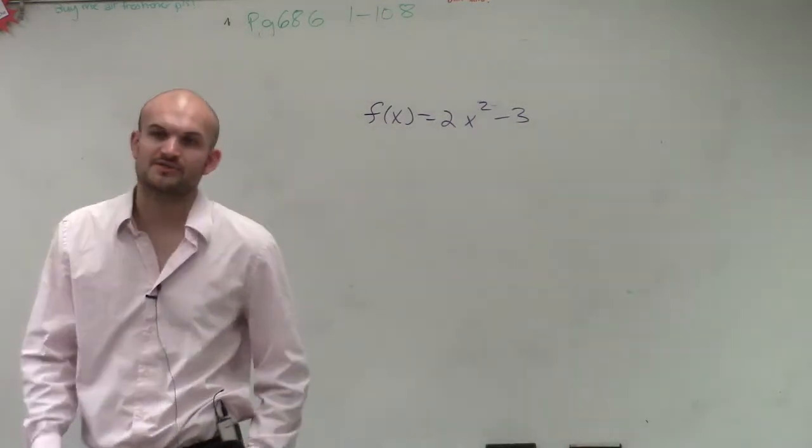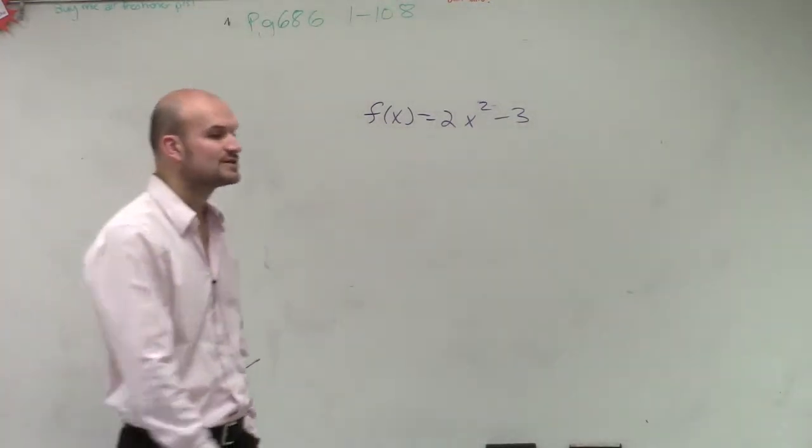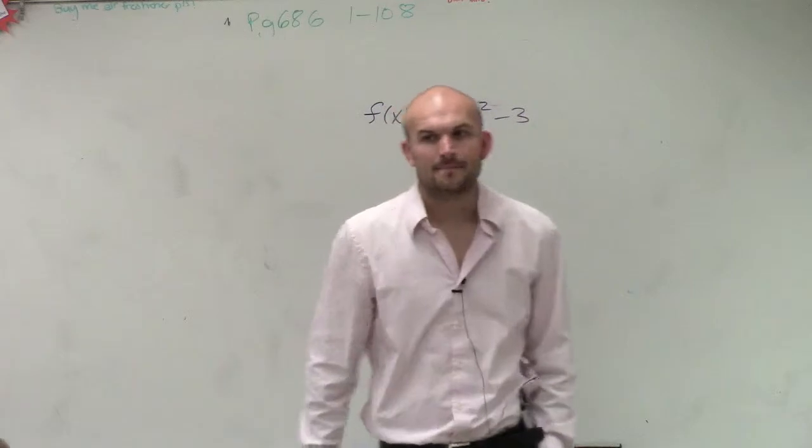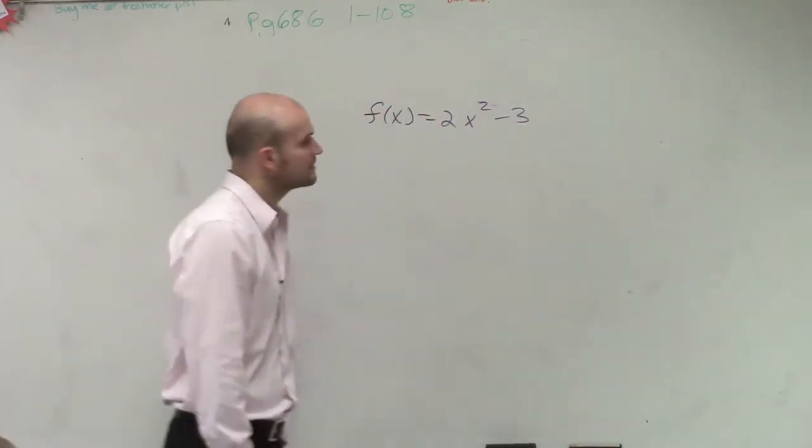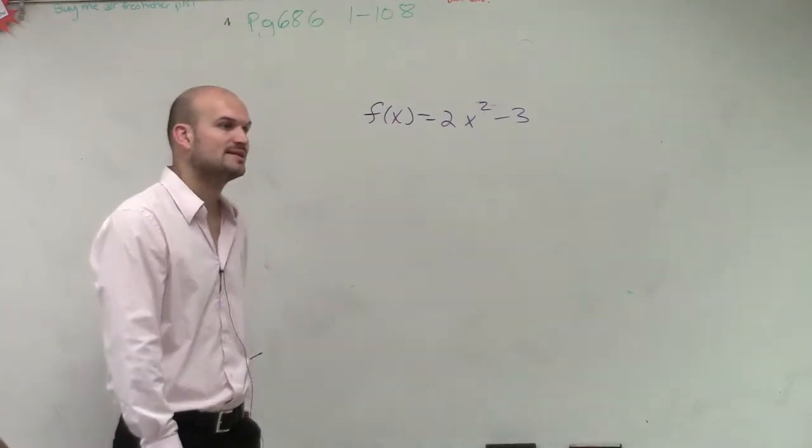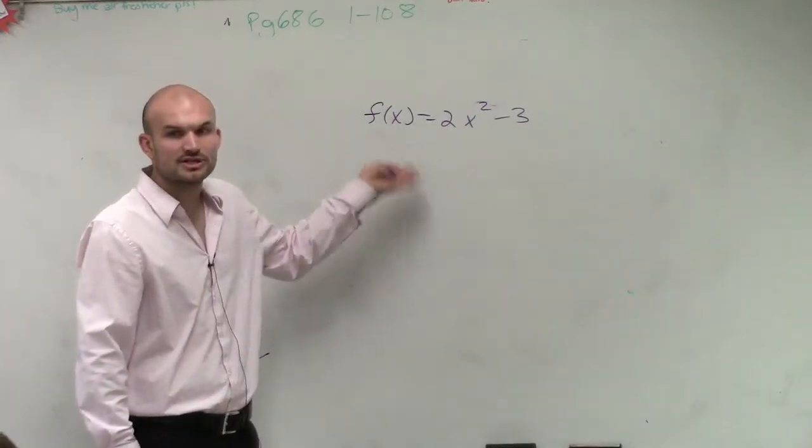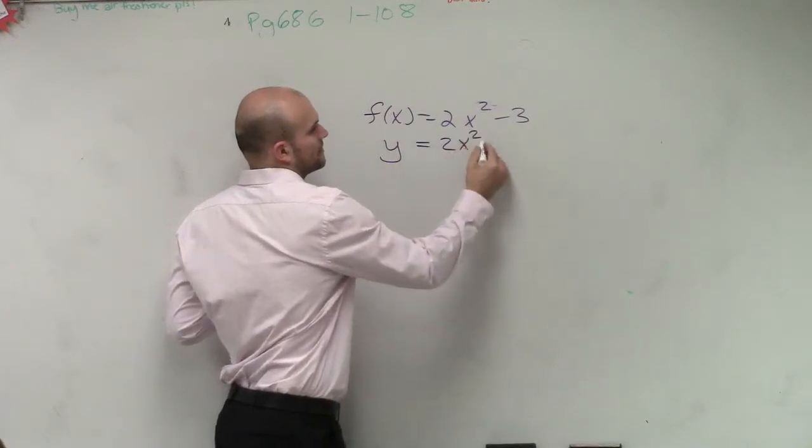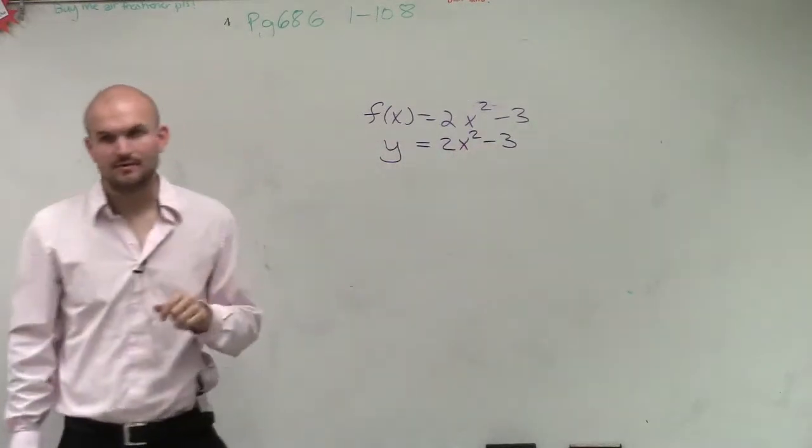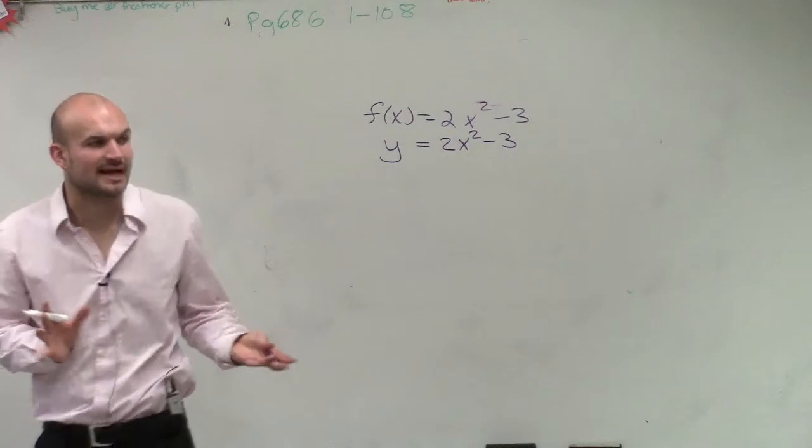So what they're asking us to do is find the inverse. Remember the inverse, there's a whole step-by-step method that we did to do this. What we did is we rewrote our function as an equation. So I replaced the f of x with the y. Then what we did is we swapped the x and the y's.